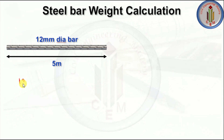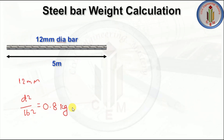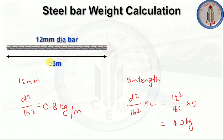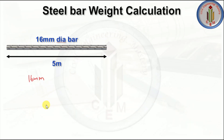Next, let's calculate for the 12 mm bar. d² divided by 162 gives 0.888 kg per meter. For 5 meter length: 12² divided by 162 multiplied by 5 meters gives us 4 kg. So 4 kg is the weight of a 12 mm dia bar for 5 meter length.